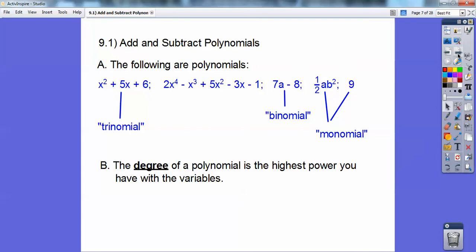Alright, so the degree of a polynomial is the highest power that you have with the variables. So look at that first one up there. The degree of that one is 2 because that's the highest power. Look at the middle one. The degree of that one is 4. Look at 7a minus b. If there's no exponent with that a, it's assumed to be 1, so the degree is 1.